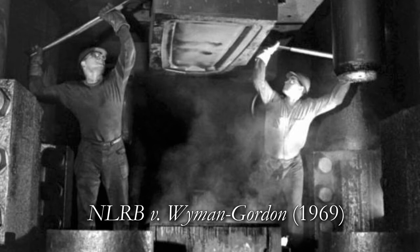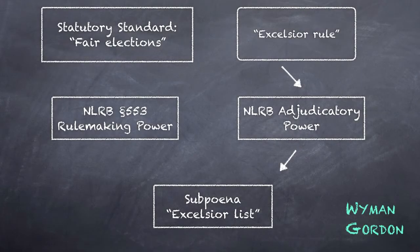The U.S. Supreme Court granted certiorari to settle a split between the federal circuits about the validity of the Excelsior requirement. There was no majority opinion in Wyman-Gordon, but a majority did agree that the Excelsior requirement, or Excelsior rule, was invalid. The board had not followed APA Section 553 notice-and-comment procedures, and it was not free to circumvent those procedures by announcing rules in the course of adjudicating.